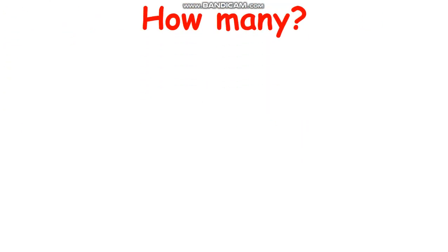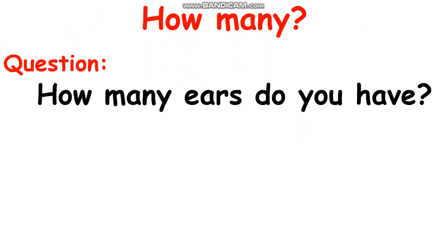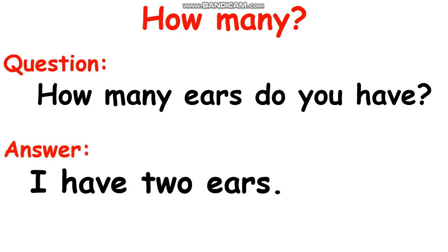Let's see an example: 'How many ears do you have?' This is the question form — 'how many' plus noun ('ears'), then 'do' because the subject is 'you', plus 'have'. So the question is 'How many ears do you have?' For the answer, when they ask 'you', you must answer with 'I'. So: 'I have two ears.' We use 'have' with 'I'.